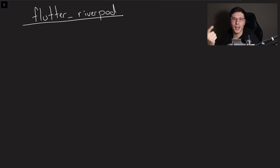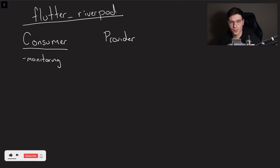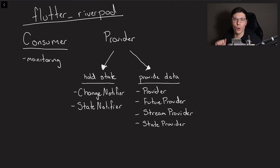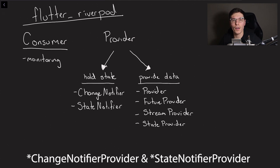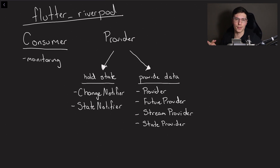Now we're going to narrow it down to two basic concepts: a consumer and a provider. A consumer lets you watch or monitor your providers and change the UI if the data changes inside your provider. The more complex one is providers, which we can break into different types. Ones that hold and can manipulate state are change notifier and state notifier. Ones that can just provide data are provider, future provider, stream provider, and state provider.